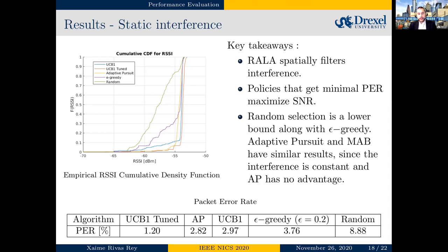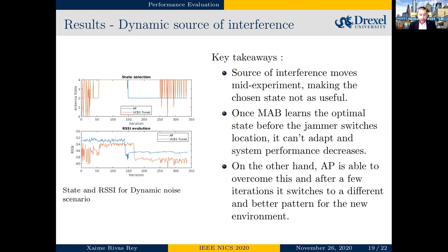Key takeaways from Scenario 2: the Reconfigurable Alpha Loop Antenna successfully filters interference by steering away from it. The cumulative density function for received signal strength (RSSI) — used as the reward fed to the algorithms — directly correlates to packet error rate. Policies that minimize packet error rate are those that maximize RSSI, as expected. With a static interference source, both multi-armed bandit and adaptive pursuit achieved very similar results, attaining the highest RSSI and lowest packet error rates. Random selection and epsilon-greedy did not perform well but serve as a lower bound.